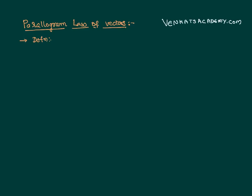Let me repeat. If there is a vector, say vector P̄, and if I have another vector Q̄ starting from the same point, if these two vectors are represented as two sides of a parallelogram — let us construct a parallelogram — this side also becomes the similar vector P̄, and this side also becomes the similar vector Q̄. Then I want to calculate what is P̄ plus Q̄, which is nothing but the diagonal of that parallelogram starting from the same point.